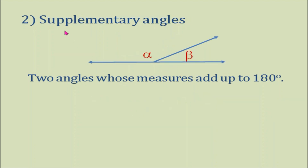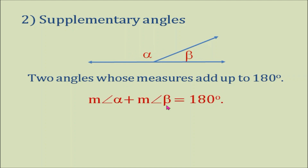Number 2: Supplementary angles. They are two angles whose measures add up to 180 degrees. Here, we have two angles, angle A and angle B. The measure of angle A plus the measure of angle B equals 180 degrees. So the two angles are supplementary.